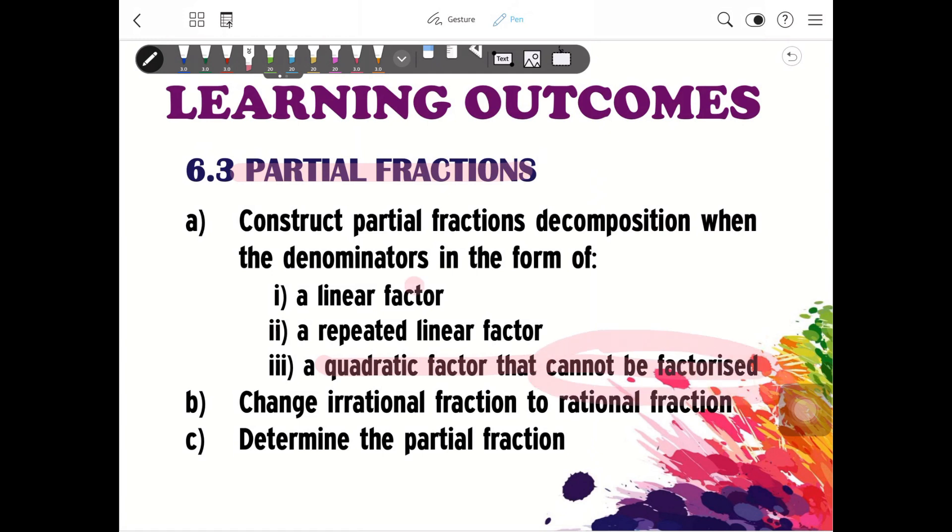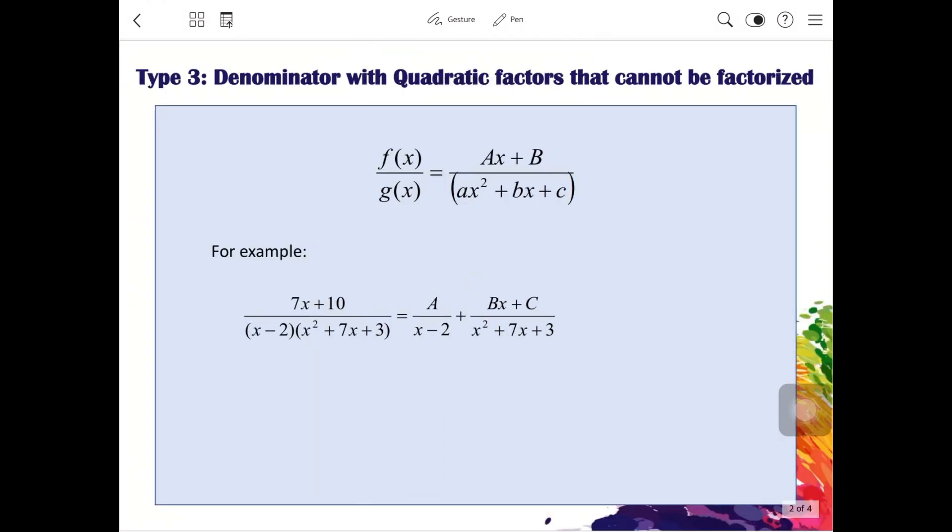So if it can be factorized, we will go back to linear factor. Where the case cannot be factorized is something like this: x squared plus 7x plus 3. So if you cannot factorize them, when it's x squared at the bottom, the top one you put Bx plus C.